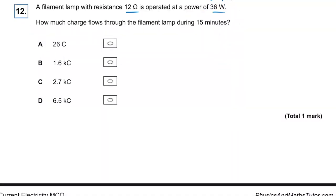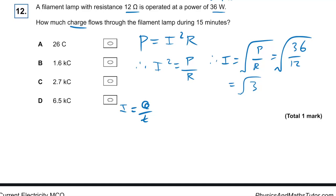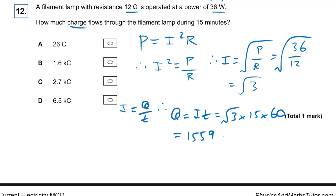Question twelve: a filament lamp has a resistance of 12 ohms and operating power of 36 watts. Using P equals I squared R, I squared equals P over R equals 36 over 12, so I equals root three amps. Charge equals current times time: root three times 15 times 60 gives 1559 coulombs, or 1.6 kilocoulombs. The answer is B.